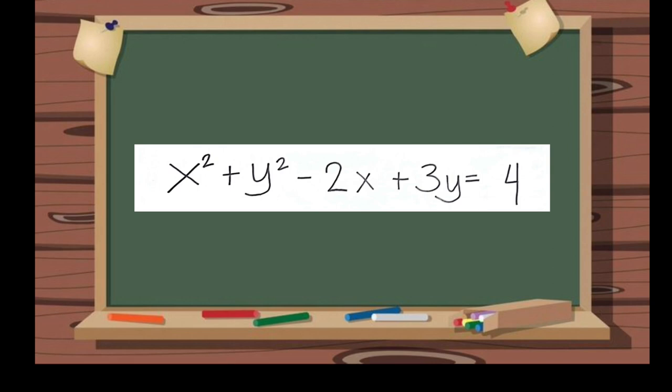The derivatives of implicit functions can be found by the process called implicit differentiation. So, let's have this example: x squared plus y squared minus 2x plus 3y equals 4. Our first step is we need to differentiate each term with respect to x.